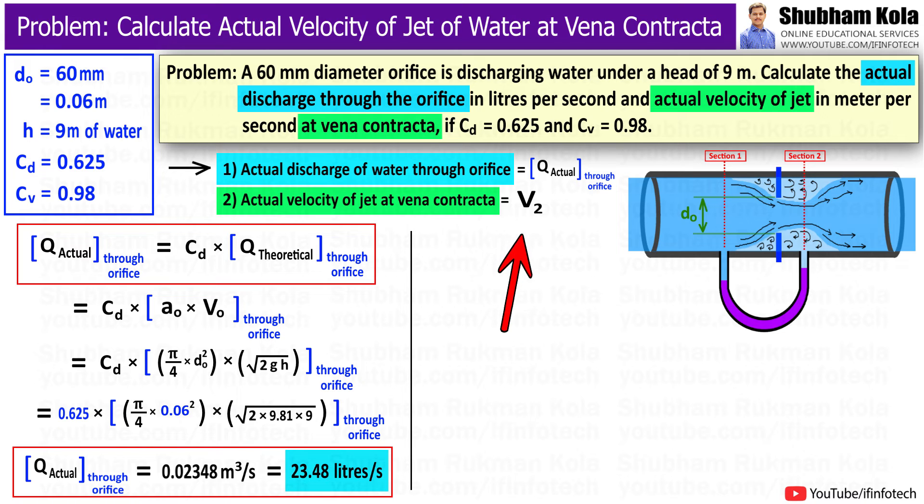The next term we want to calculate is the actual velocity of the jet at vena contracta, which is denoted as V₂. To calculate V₂, I will use the continuity equation: A₀V₀ = A₂V₂.